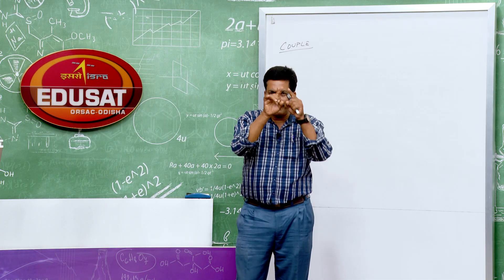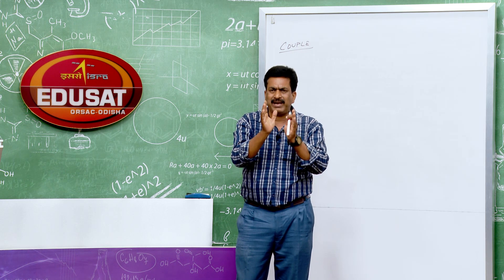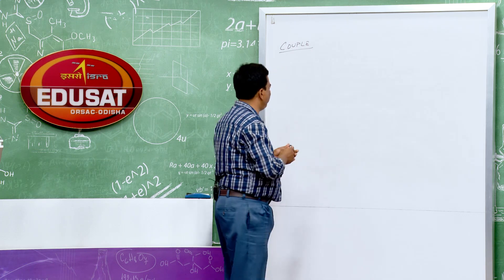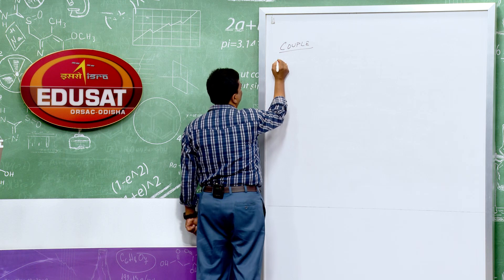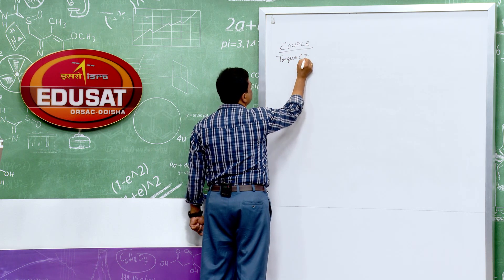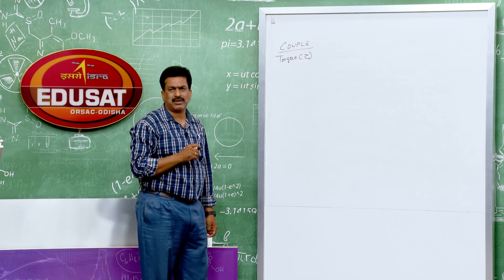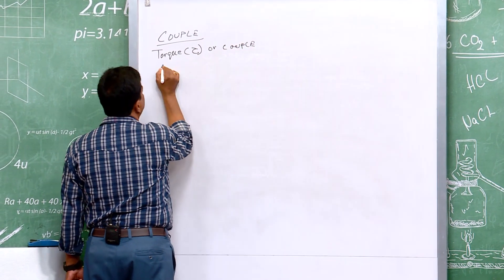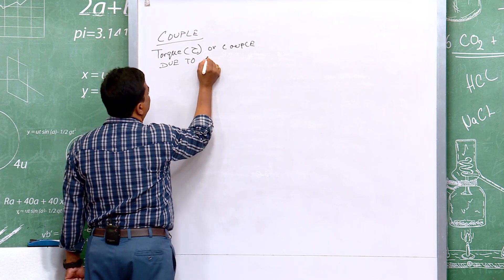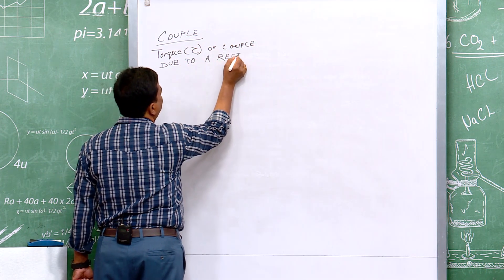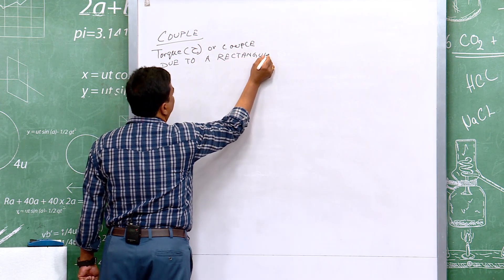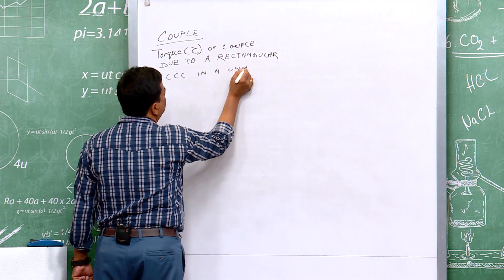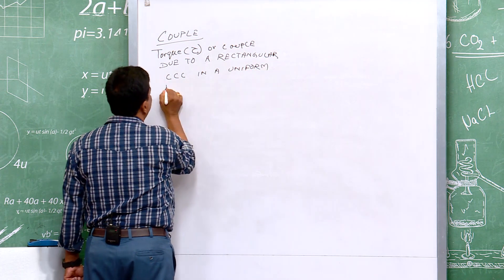So the key point: if a rectangular conductor is placed in a uniform magnetic field, it automatically starts to rotate. Today we are going to find out the torque — in physics mechanics the symbol is tau — which is the torque or couple due to a rectangular current-carrying conductor in a uniform magnetic field.